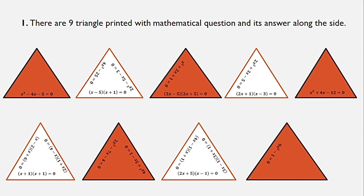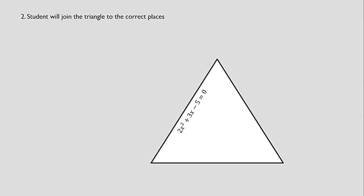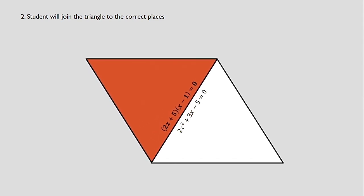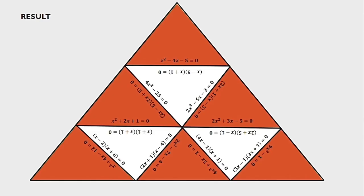Now, let me show you how to play Pascal's Triangle. First of all, there are nine triangles, each printed with a mathematical question and its answer along the side. Students will need to join the triangles correctly to the correct places based on the question and its answer. After joining all the triangles correctly, you will form a big triangle.